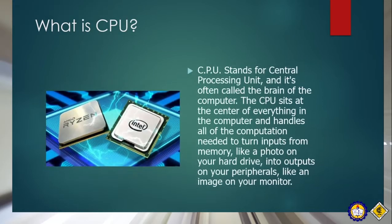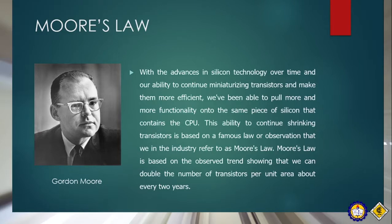What is a CPU? CPU stands for Central Processing Unit and it's often called the brain of the computer. CPU sits at the center of everything in the computer and handles all the operations needed to turn inputs from memory, like a photo on your hard drive, into outputs on your peripherals like an image on your monitor. With the advance of silicon technology over time and our ability to continue miniaturizing transistors, we've been able to pull more and more functionalities onto the same piece of silicon. This ability to continue shrinking transistors is based on the famous Moore's law, which shows that we can double the number of transistors per unit area about every two years.